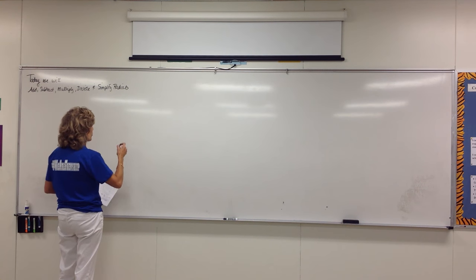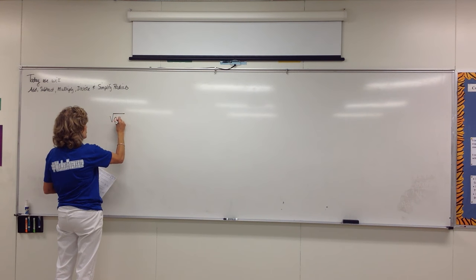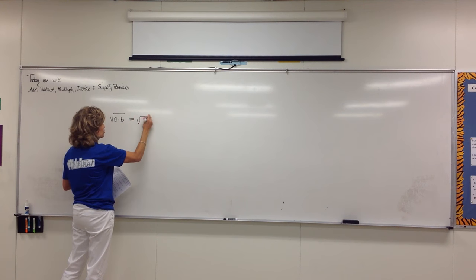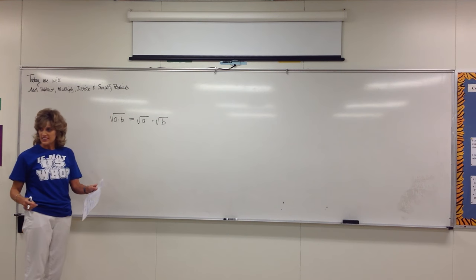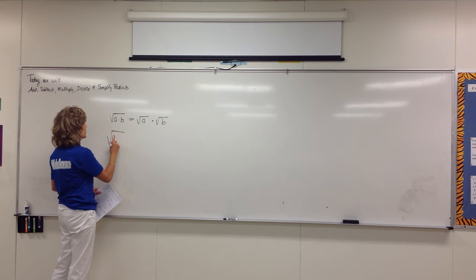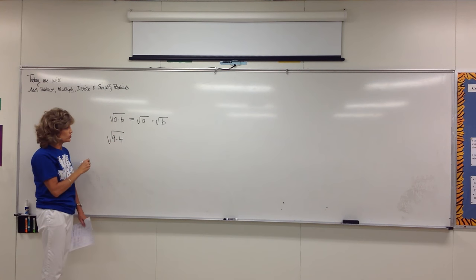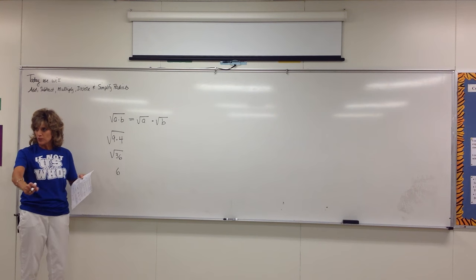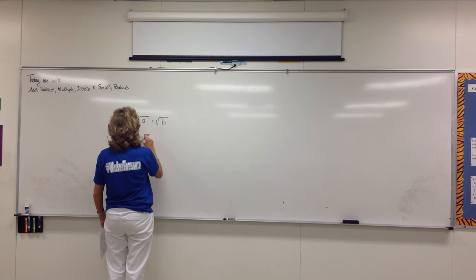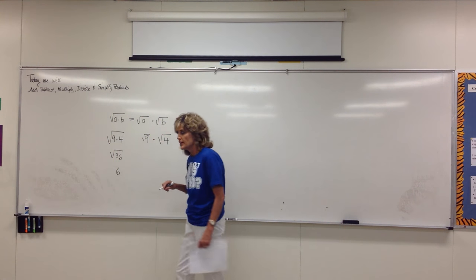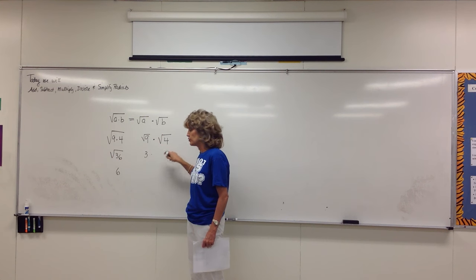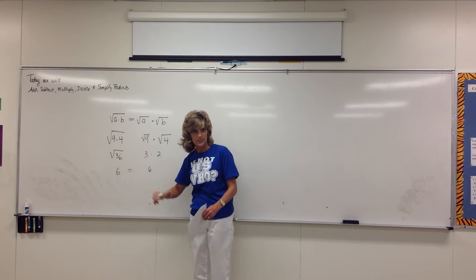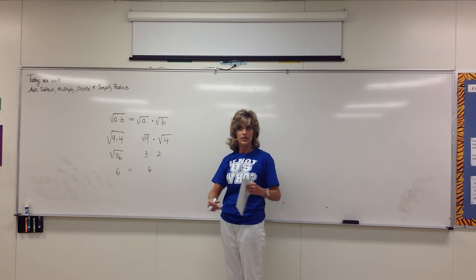There are two rules for radicals. You have the product rule, and it says this: if you have the square root of A times B — if you are multiplying under a radical — it is okay to pull it apart into two pieces: the square root of A times the square root of B. For example, the square root of 9 times 4 under one radical is the square root of 36, which is 6. If you pull it apart, the square root of 9 is 3 and the square root of 4 is 2, and 3 times 2 also gives you 6. So if you're multiplying underneath a radical, it's okay to pull it apart and write it in two separate pieces.